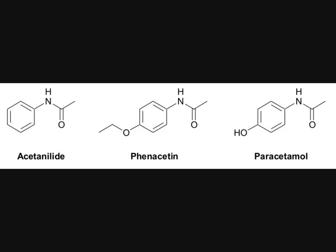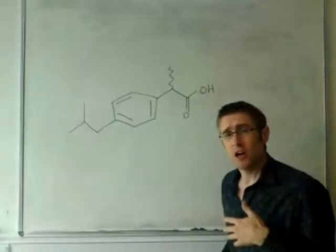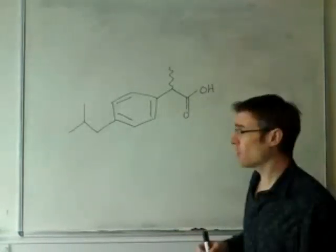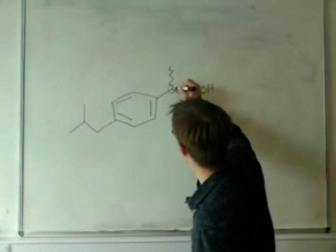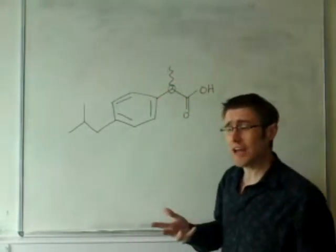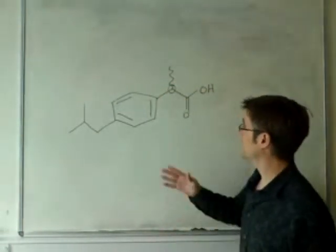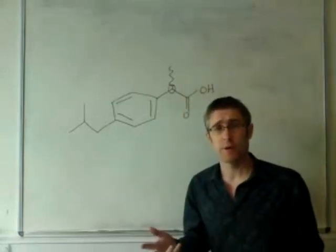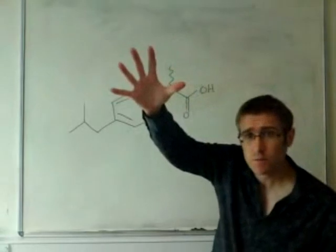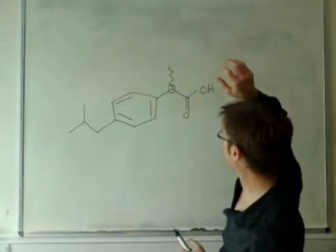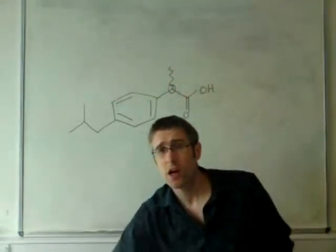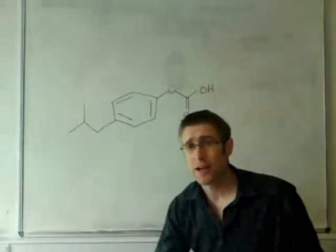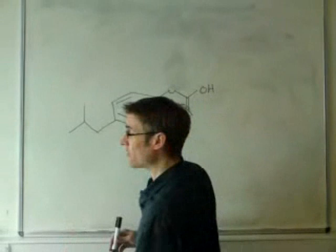So this is the structure of ibuprofen, and I said we were going to look at the chirality of this molecule. We're going to focus on this carbon atom here, which has the wavy bond coming out of it. There are two possible orientations of this methyl group. It could either be pointing out of the board towards you, the viewer, or it could be pointing back into the board, away from you.